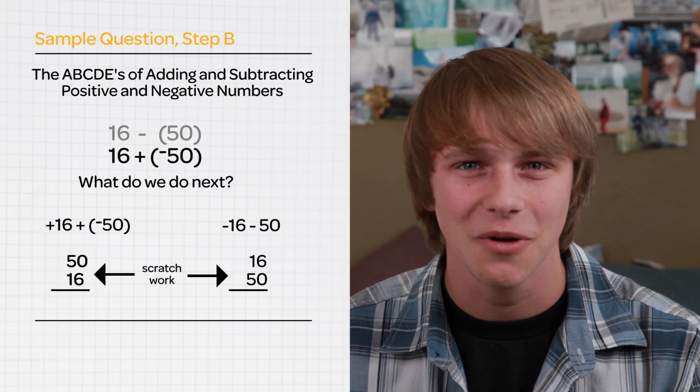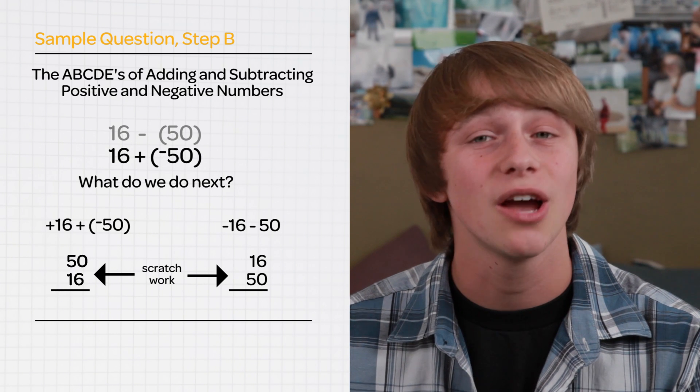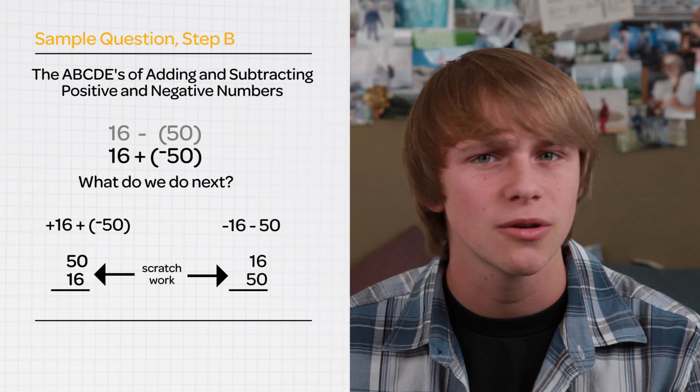B, big positives, bigger number first. If we're following the ABCDEs, what could we do next?